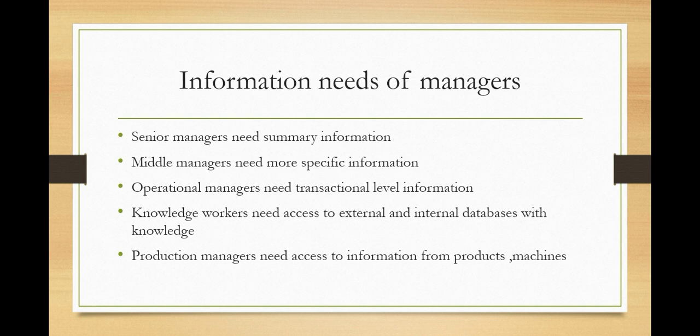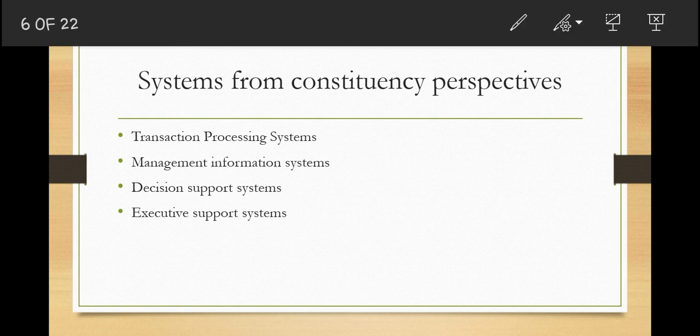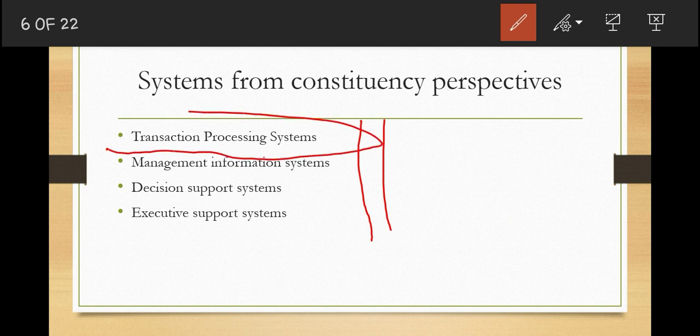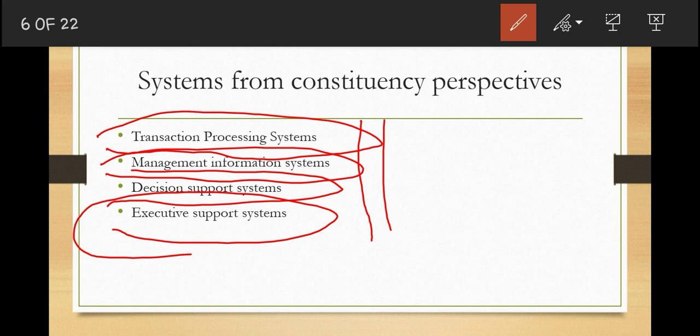Each of these three main groups uses different types of information systems to derive the information required to manage the company. Looking at information systems from a constituent perspective, we have four types: transactional processing systems, management information systems, decision support systems, and executive support systems.